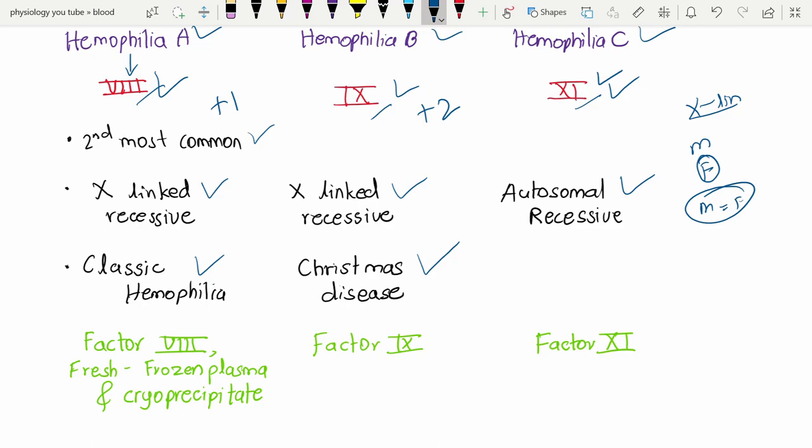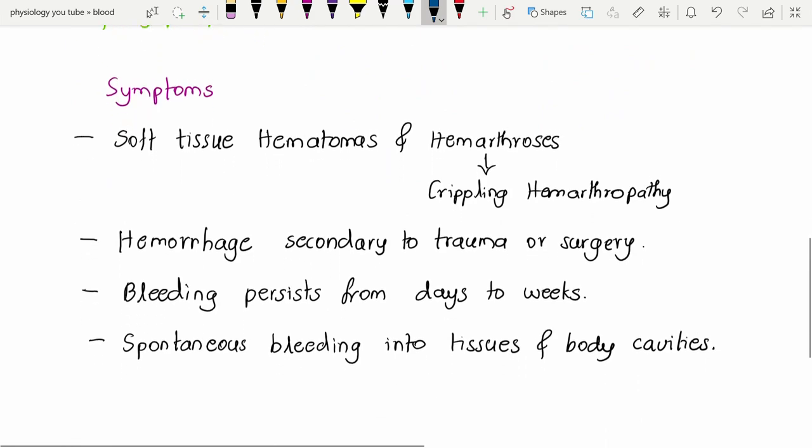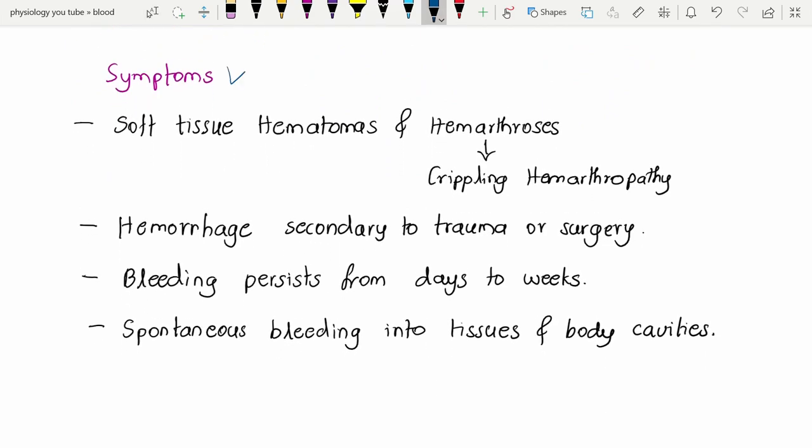As you know, this is a bleeding disorder, so the main symptom will be associated with excessive bleeding. The most common feature that we will see is hemarthrosis, which means bleeding into the joint cavities, and the patient will manifest with crippling hemarthropathy.